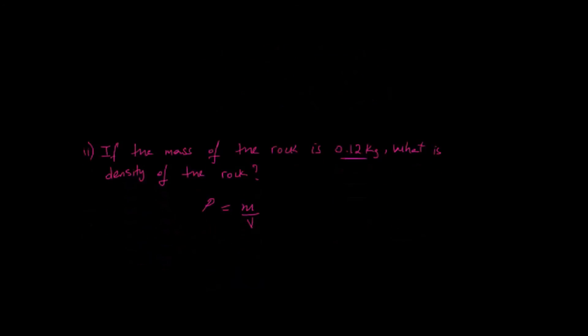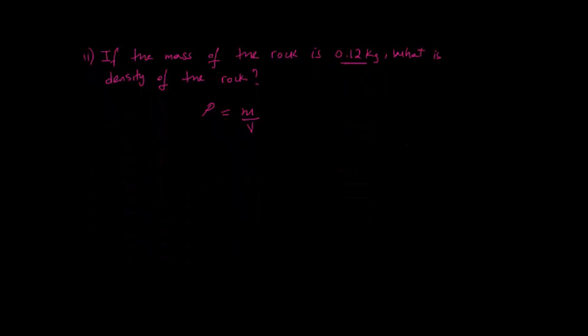So the mass is here and the volume is what we just calculated earlier. So we can write that density is equal to 0.12 kilograms divided by 4.3 times 10 to the minus 5 meters.